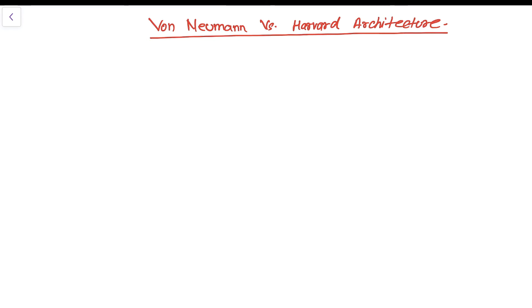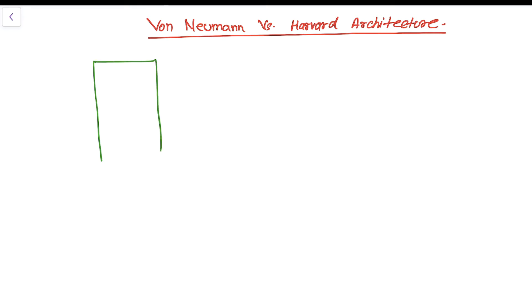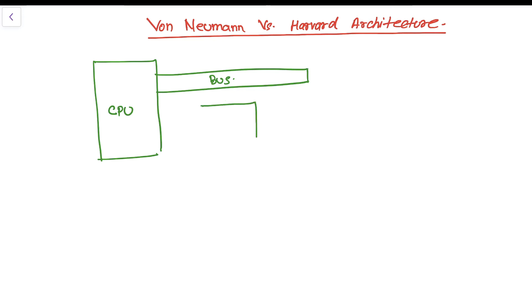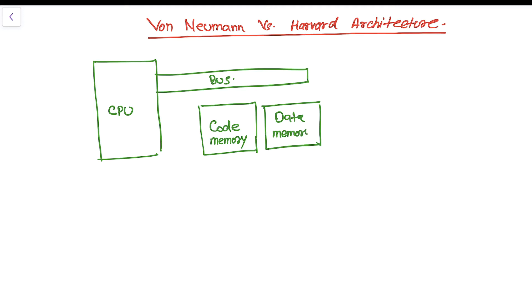In Von Neumann architecture, the same memory and the same bus are used to store both data and instruction. I can show you this with a block diagram. Let's say there is a CPU here, and the CPU has a bus, and then this bus is connected — the same bus — it's connected with the code memory.